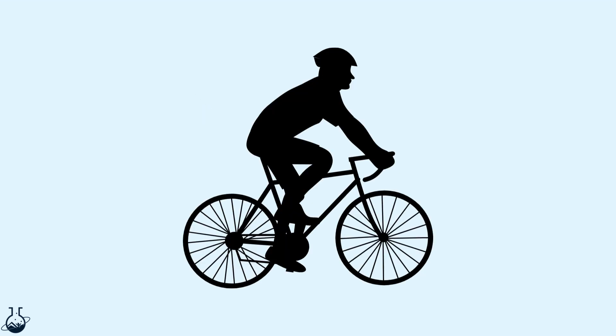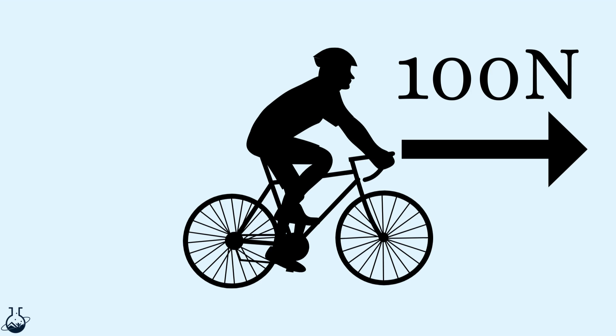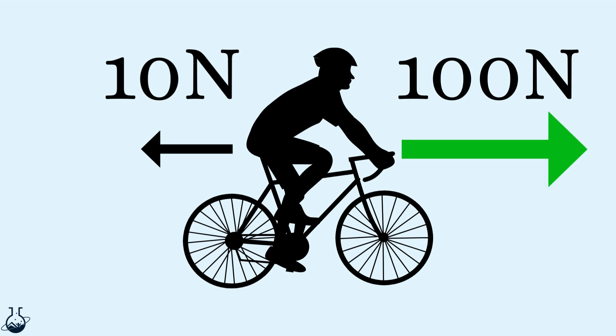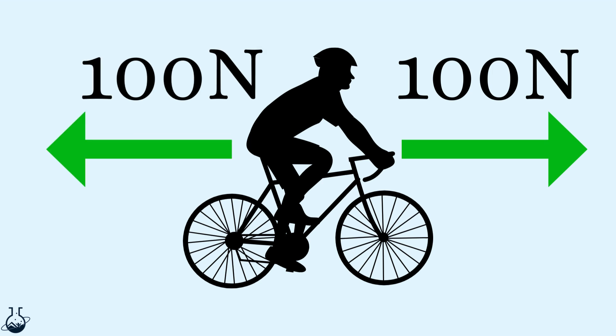Take this cyclist for example. Cycling with a thrust force of 100 Newtons, but only 10 Newtons of air resistance. This imbalance results in an overall forward force and the cyclist speeding up, accelerating. But as the cyclist goes faster, more air hits them. So air resistance also increases until thrust and air resistance are the same. They are balanced. So we can now say the cyclist is travelling at a constant speed.